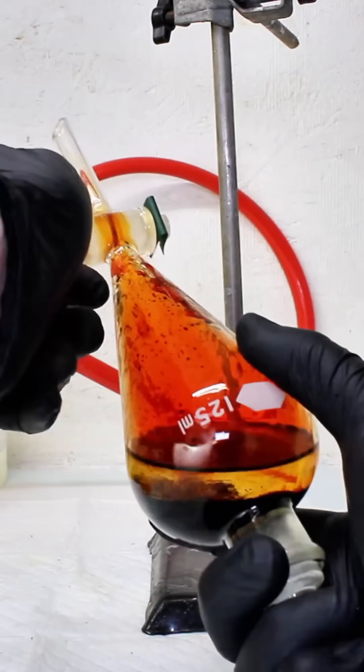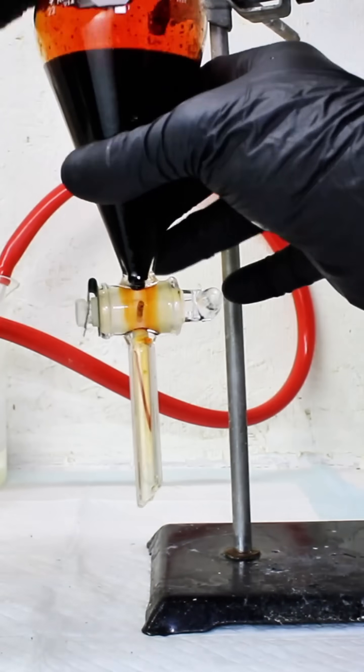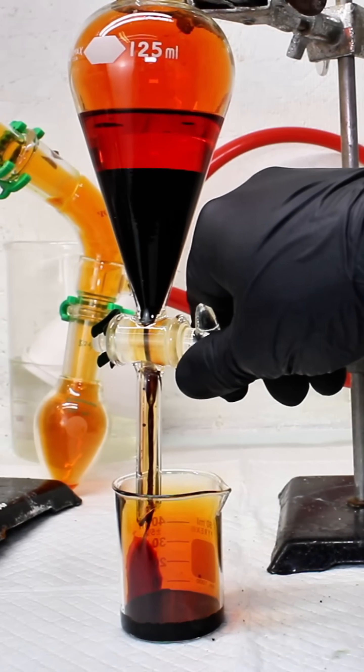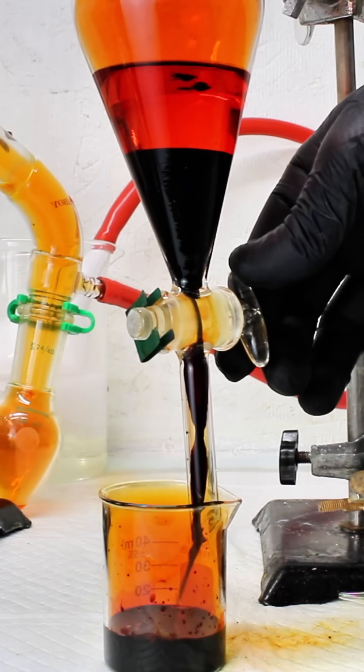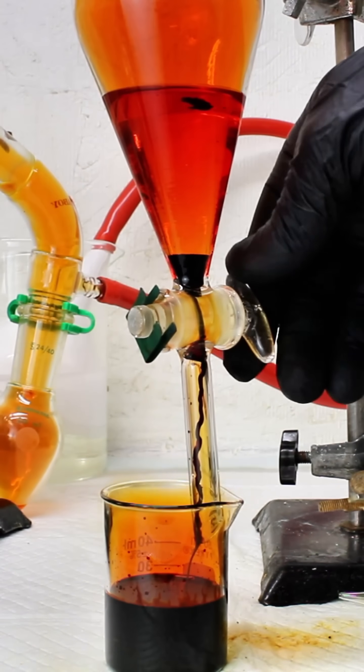The sulfuric acid will dehydrate bromine at the molecular level, but it will leave the final bromine slightly acidic, which can be fixed with another distillation. Now that my bromine was completely dry,